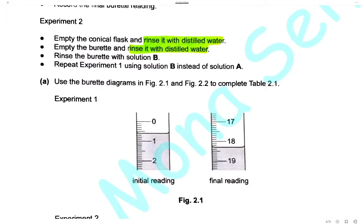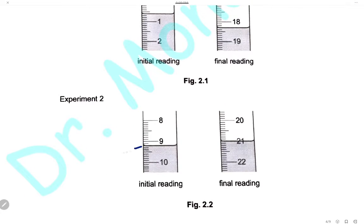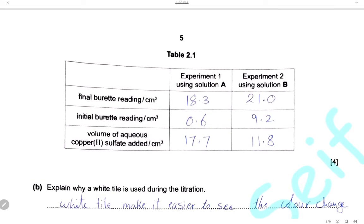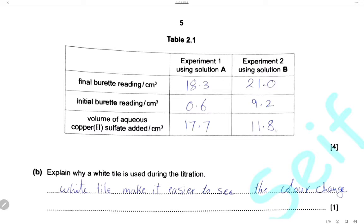Here we have the diagram for experiment 1 to show the initial and final burette readings. The initial reading is 0.6 and the final reading is 18.3. For experiment 2, the initial reading is 9.2 and the final reading is 21.0. We complete the table: for experiment 1, initial 0.6, final 18.3, volume used = 17.7 cm³. For experiment 2, the volume of copper sulfate solution B used is 11.8 cm³.